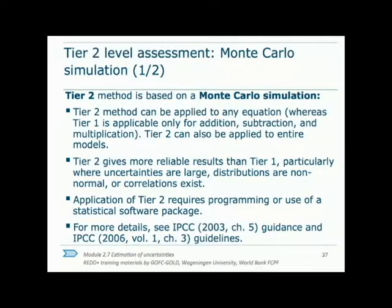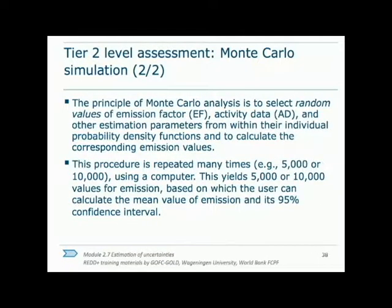If one has access to statistical software such as R or SAS, then Tier 2 could be used and is preferable. There is an enormous amount of literature on Monte Carlo simulation, but the takeaway is that if possible to implement Tier 2, it will give more accurate results. Briefly, a Monte Carlo simulation selects random values of model variables based on the probability density function of that variable and calculates the corresponding emission values. This procedure is repeated many times, and based on these simulations, the mean emission estimate can be obtained with a confidence interval.